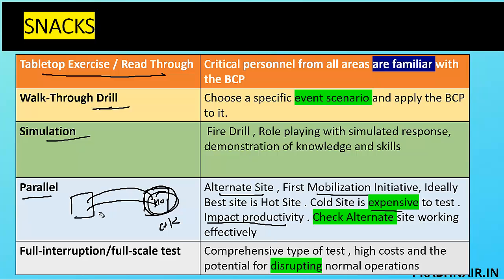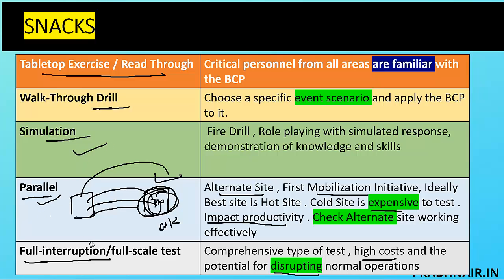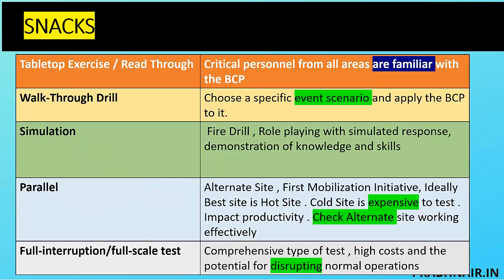The goal of parallel testing is to check whether the alternate site has adequate configuration. Full interruption is performed at the primary site, once a year — it is the most comprehensive, high-cost test with potential to disrupt normal operations. Productivity impact increases progressively: simulation has a small impact, parallel has more, and full interruption has the highest. Summary: tabletop — read the plan; walkthrough — explain and rehearse the plan; simulation — fire drill role-play; parallel — test at alternate site; full interruption — test at primary site.